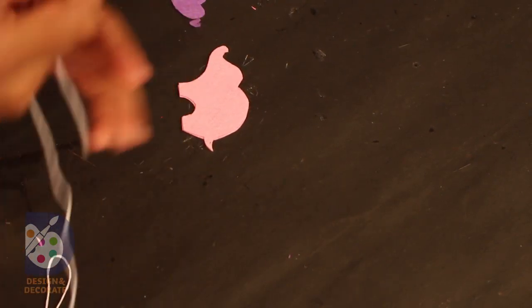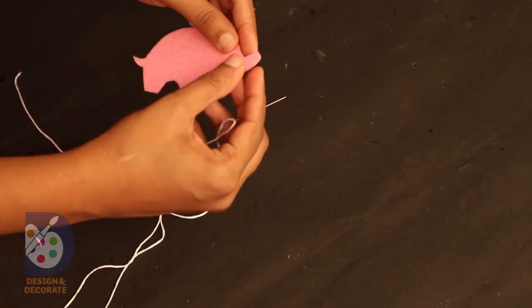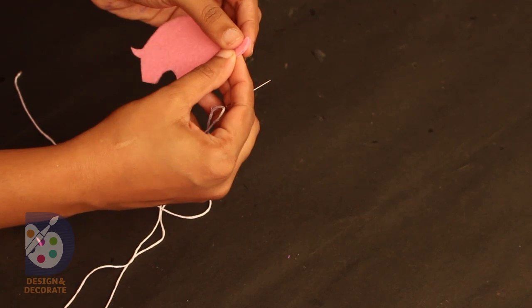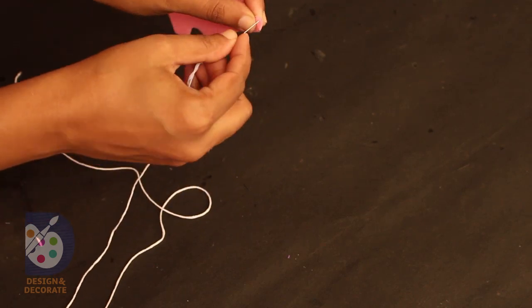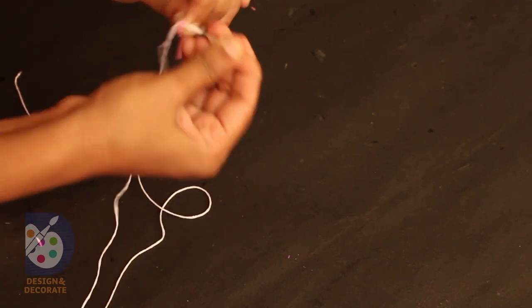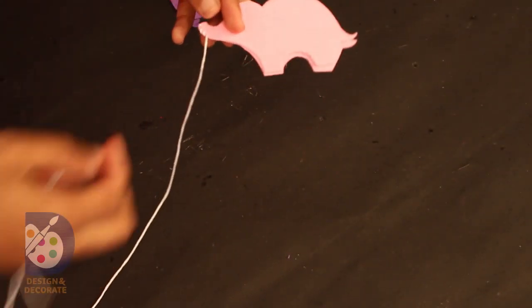Now it's time to stitch. Take the white embroidery thread in the needle and start stitching the elephant pieces together. I'm using a normal stitch here and it's very simple. You can easily follow it.